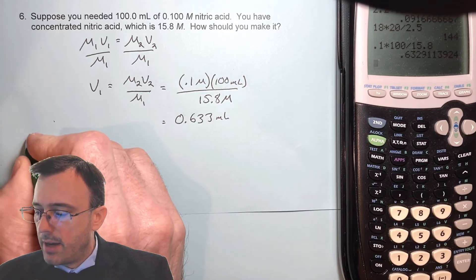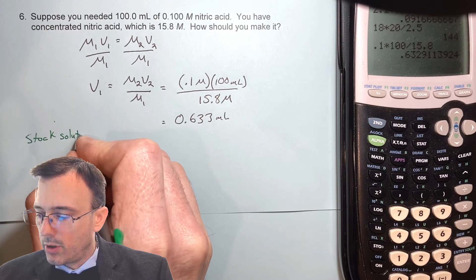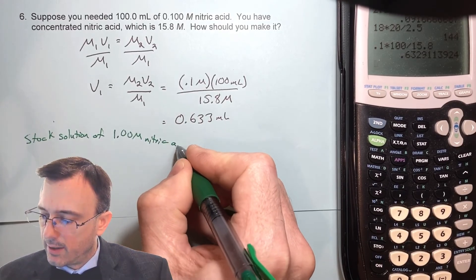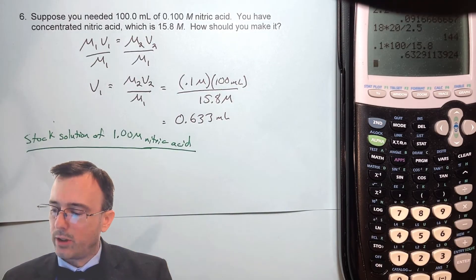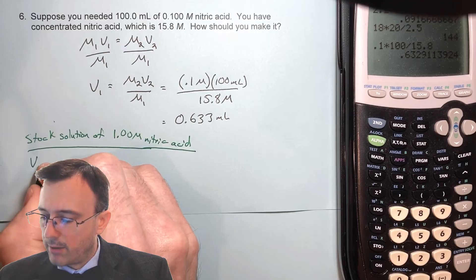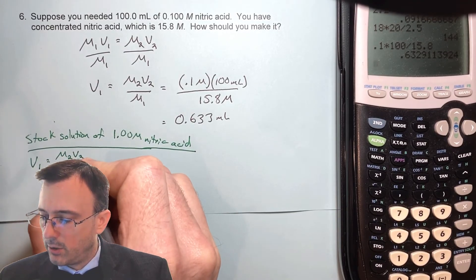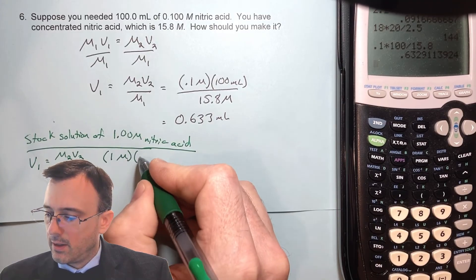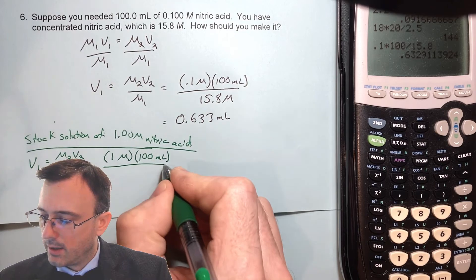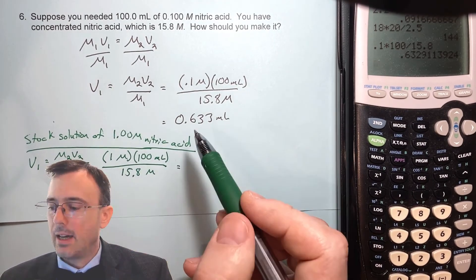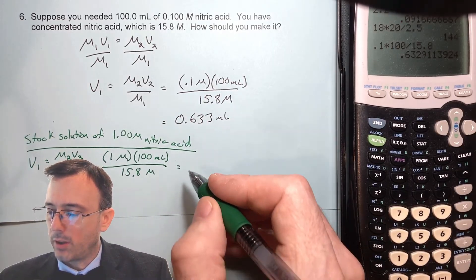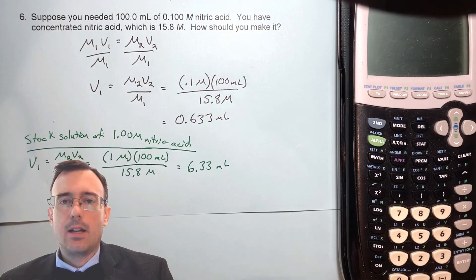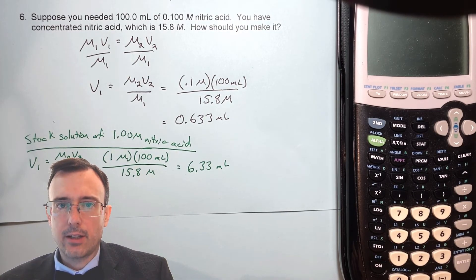What's useful here is to first make a stock solution of 1 molar nitric acid, and then dilute that down to 0.1 molar. Using the same equation with M2 now equal to 1 molar and M1 equal to 15.8, and making 100 milliliters — that is simply 10 times as much as before, giving us 6.33 milliliters of concentrated nitric acid to measure out.